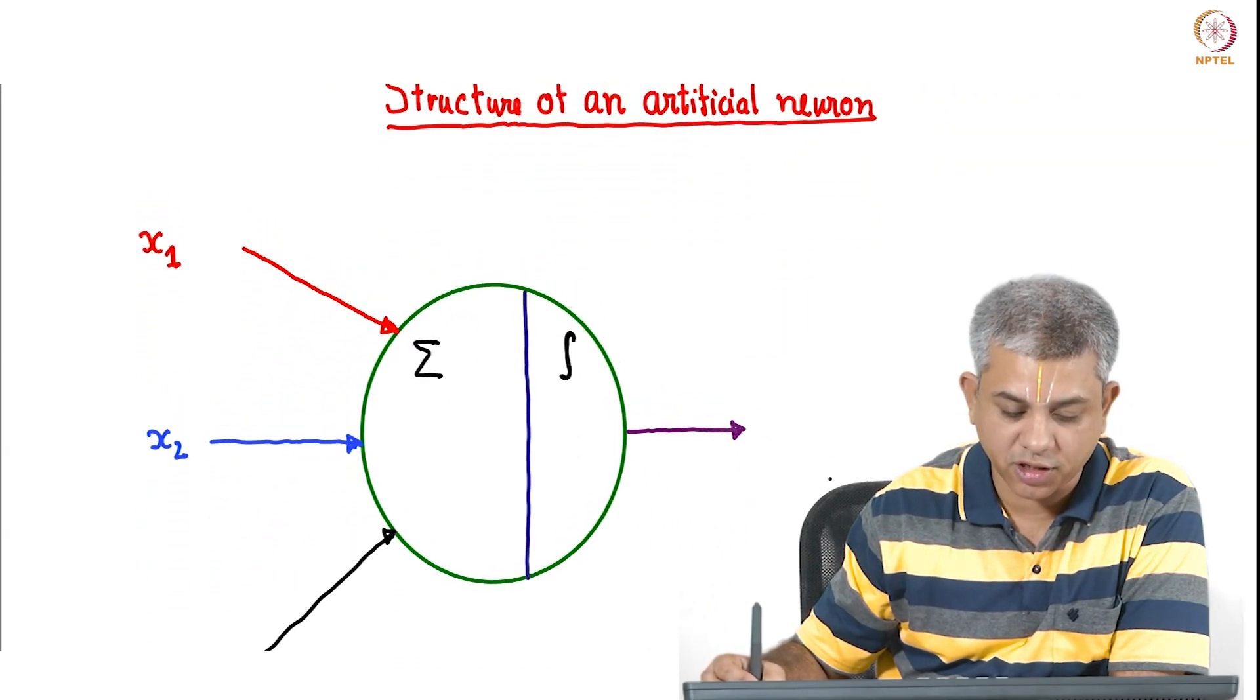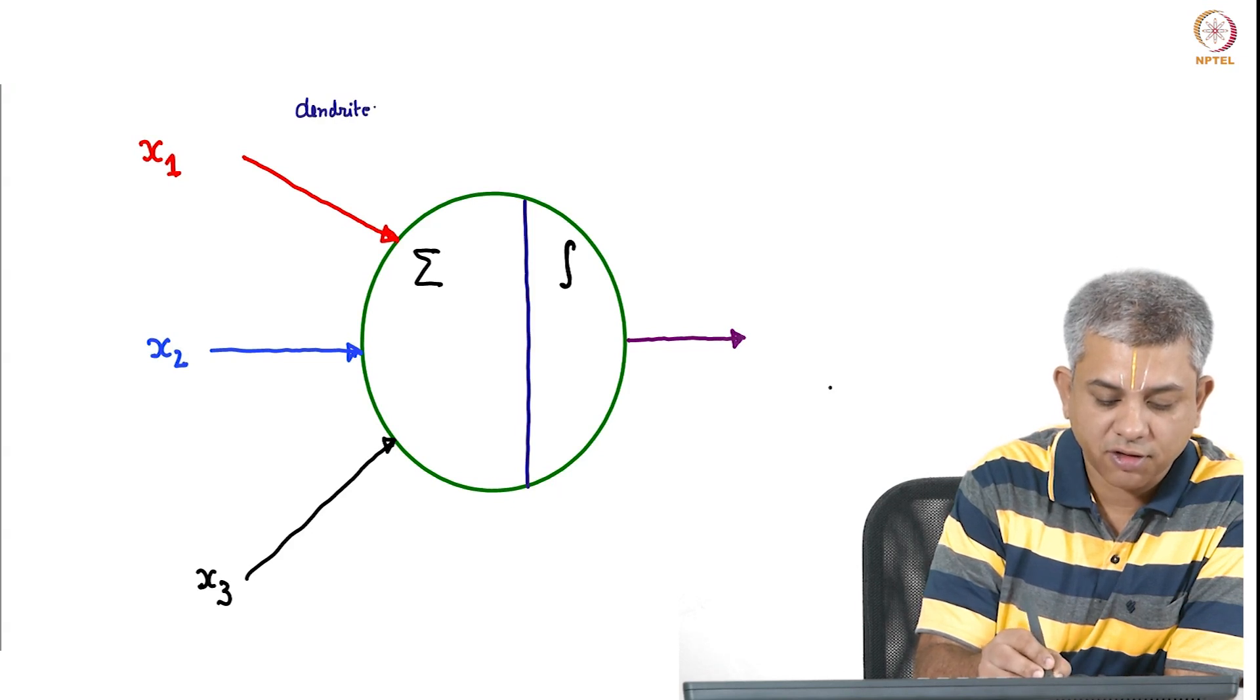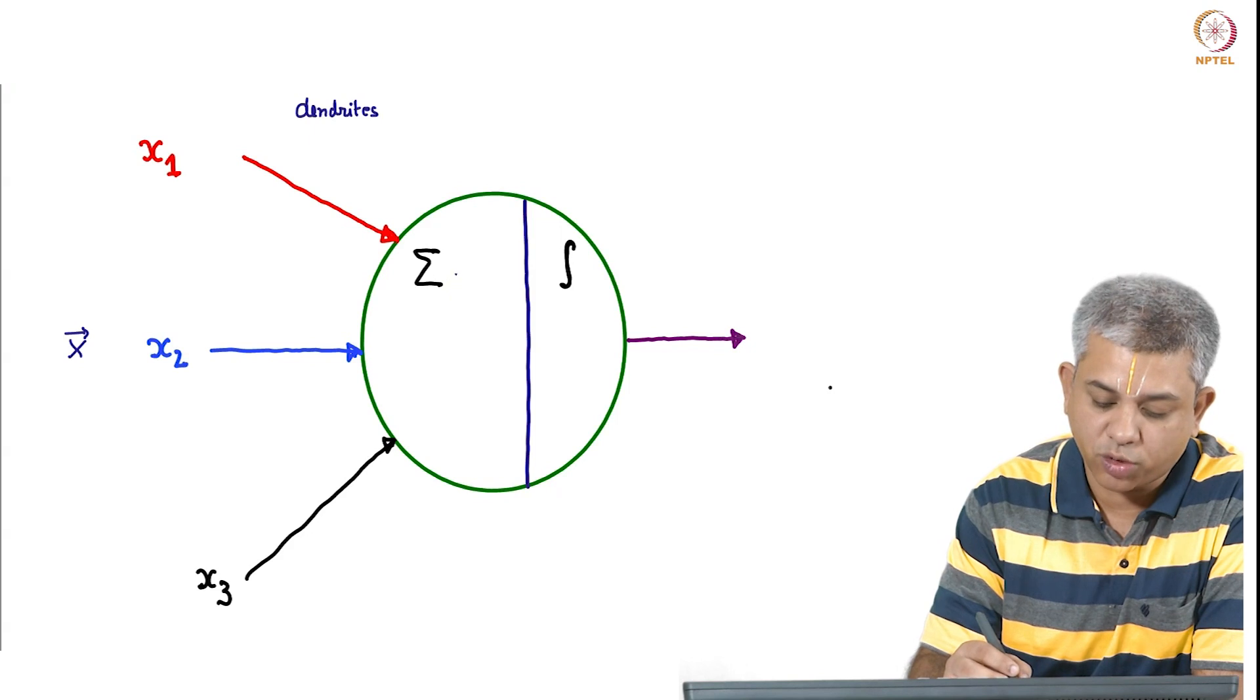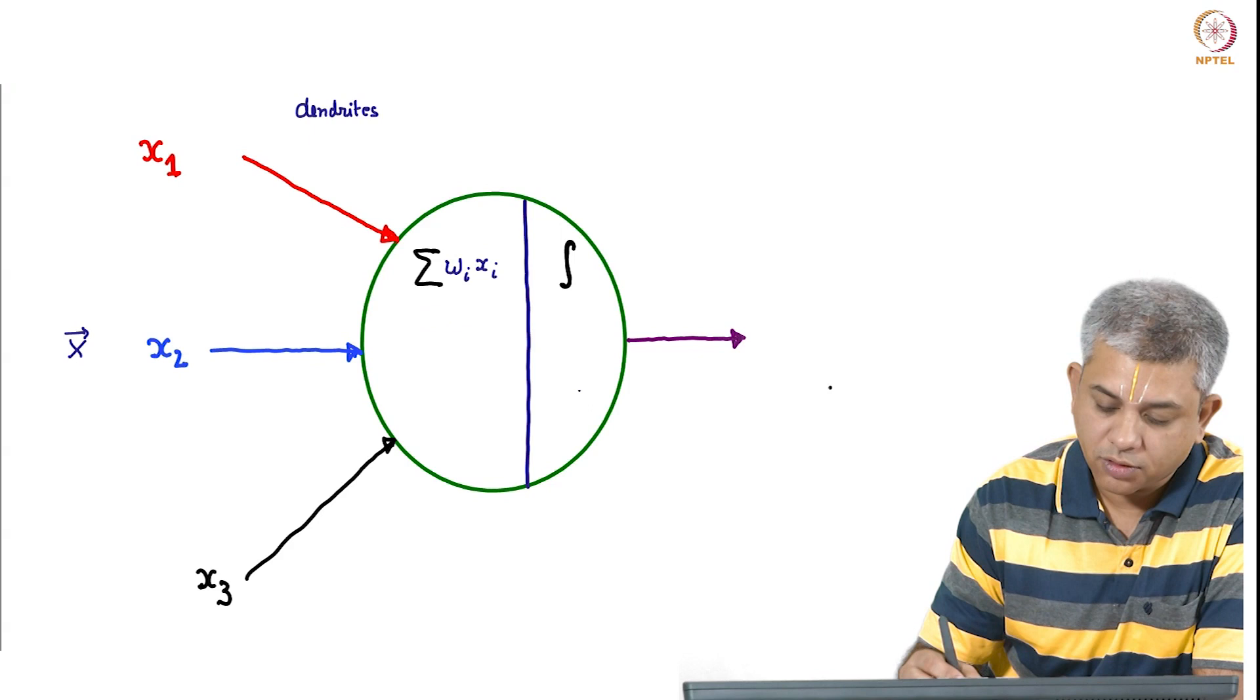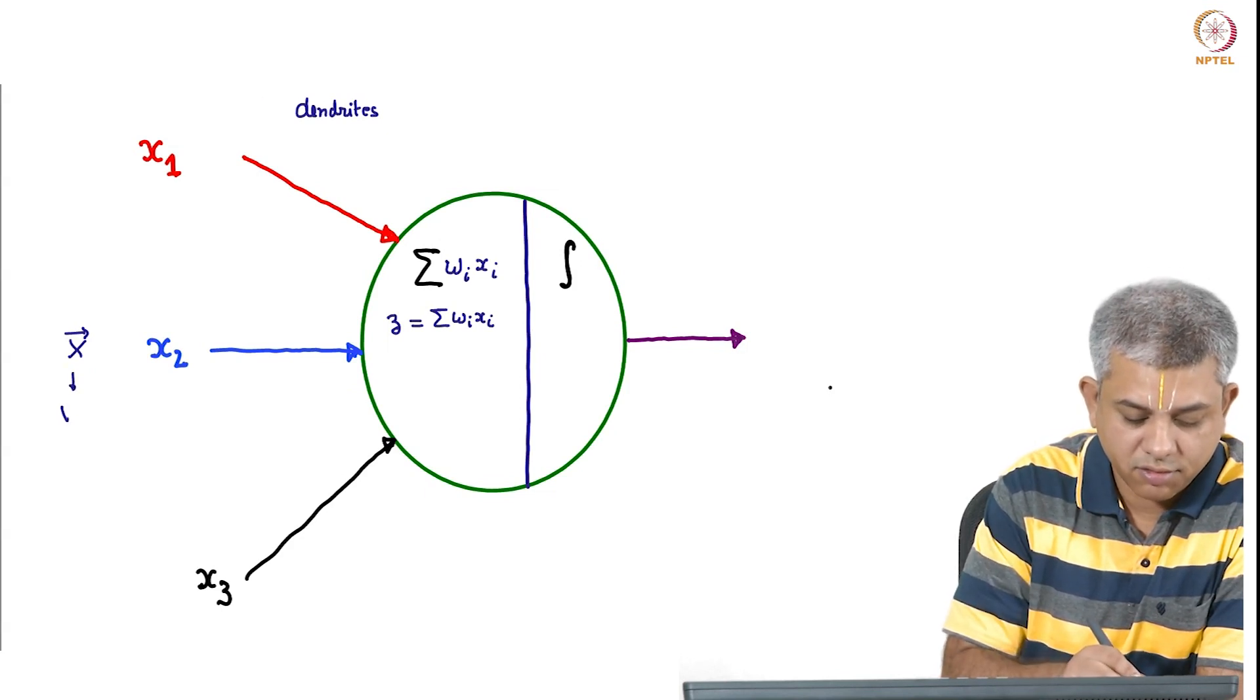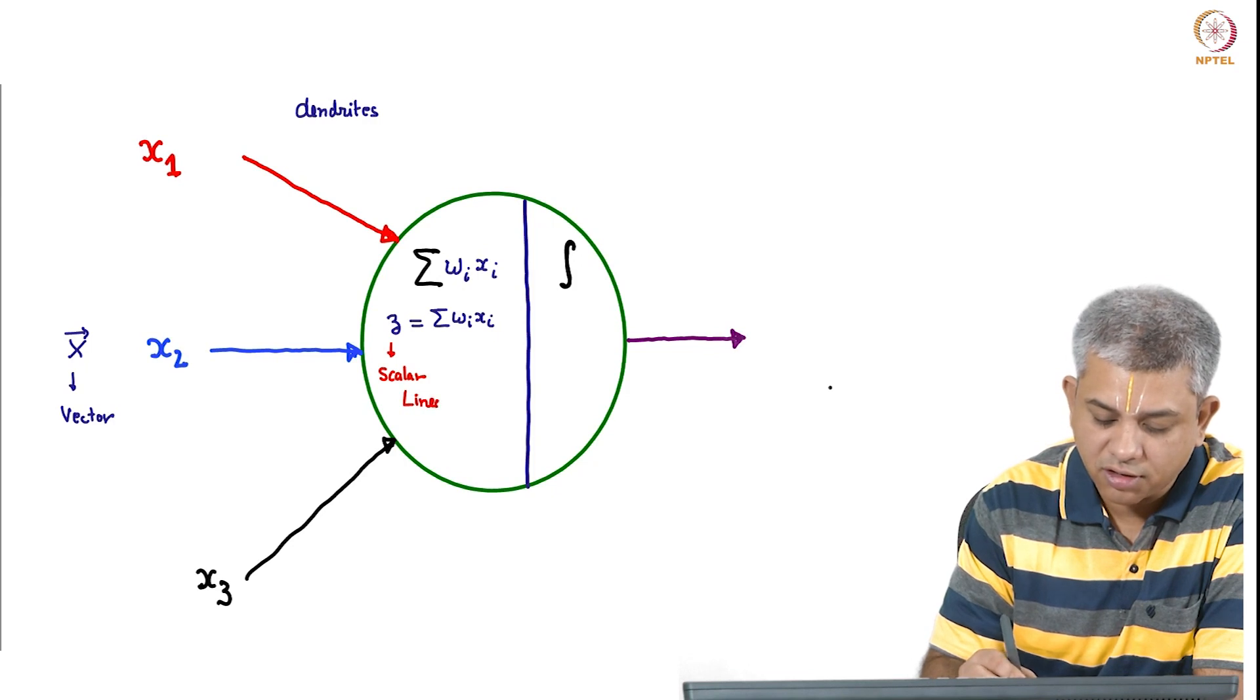Let us look at what an artificial neuron looks like in a neural network. Suppose you have some inputs coming in from one end. Biologically these are supposed to be the equivalent of dendrites. You have some three variables, in general some vector x which has these features x1, x2, x3. All these three come in and as usual, as we did with both linear regression as well as classification, we simply take a linear combination. So we do sigma wi xi and this component we call z. Remember the x that comes in is a vector, and what comes out of this linear combination z is a scalar. Till this point what we have here is essentially a linear combination.